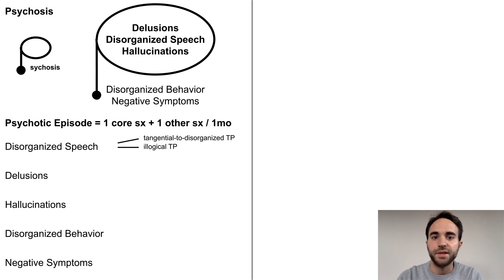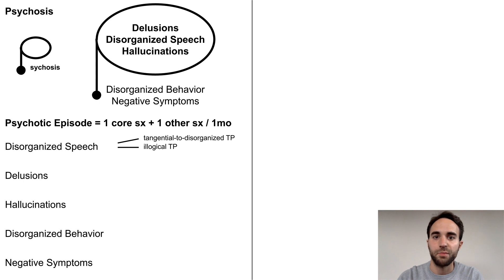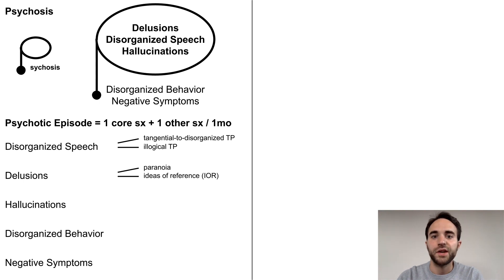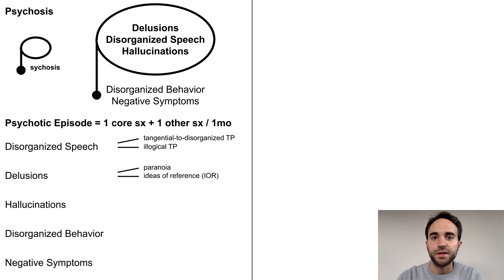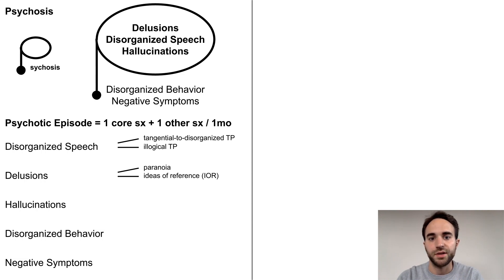Disorganized speech can be identified by observing a patient's thought process — for example, a tangential or illogical thought process. Delusions are fixed, false beliefs that are not amenable to change despite conflicting evidence. Delusions of any kind can occur in psychosis, but two of the most common are paranoia, also known as persecutory delusions, and ideas of reference, also known as referential delusions.